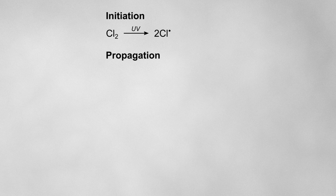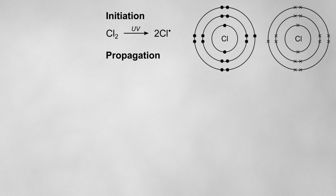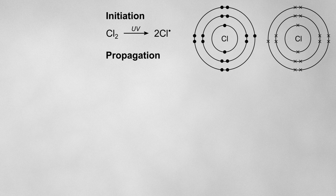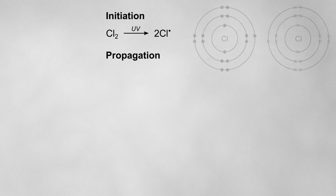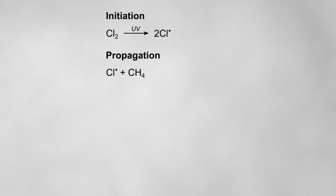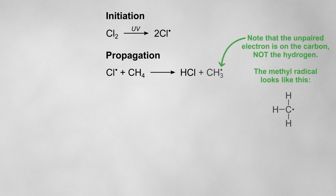The next step is called propagation. Radicals are highly reactive because they have an unpaired electron but still want a full outer shell, so they'll essentially rip an atom off of the first molecule they come across in order to obtain this. If a chlorine radical collides with a methane molecule, the chlorine radical will rip a hydrogen atom off to form regular HCl and leave behind a methyl radical.